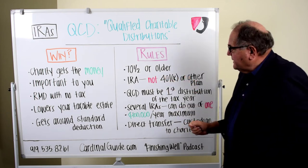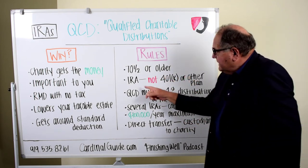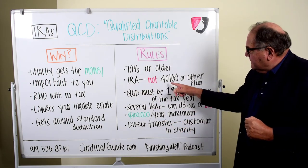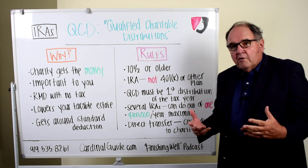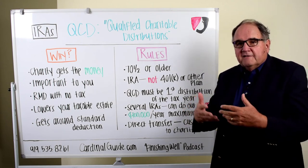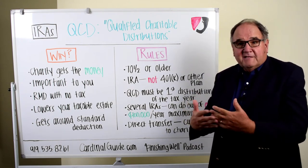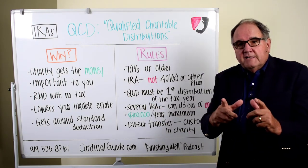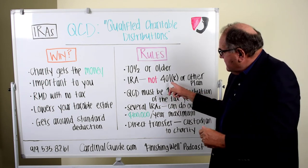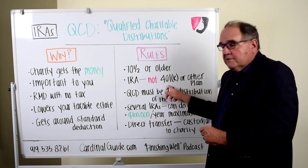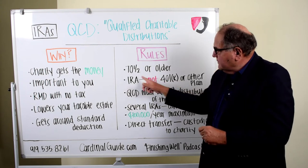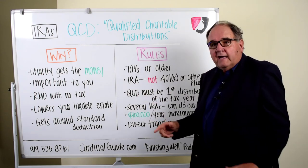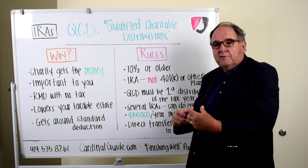If your spouse is 70 and a half but you're in your 60s, we can do the QCD out of their IRA this year, then wait until you reach 70 and a half to do it from yours. Also importantly, a QCD needs to come from an IRA — it can't be from a 401k, 403b, or any other plan that looks and feels like an IRA but isn't. If someone has funds in a 401k and wants to do QCDs, we'll do a tax-free custodian-to-custodian rollover into an IRA first.